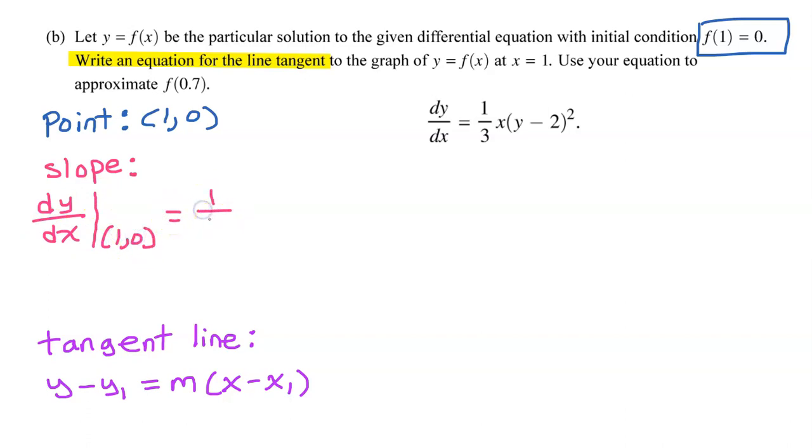This will equal 1/3 and then x is 1, so I don't need to write that. Moving on to the y, which is 0, I'm not going to put anything there either. That's going to leave negative 2 squared. Negative 2 squared is positive 4, and then I have positive 4 over 3. So the slope of the tangent line is 4/3.